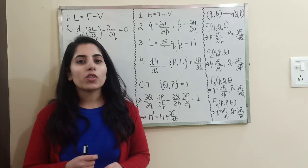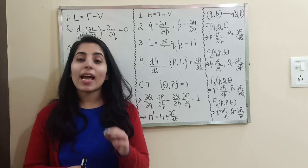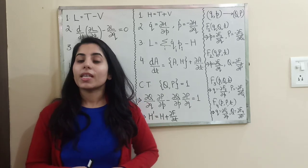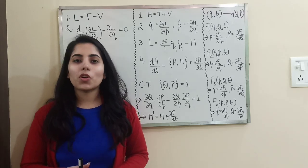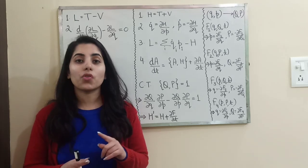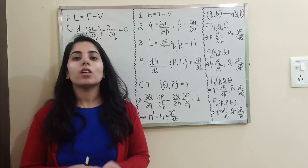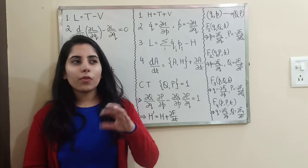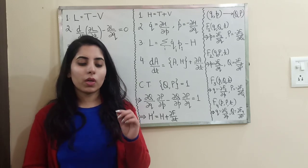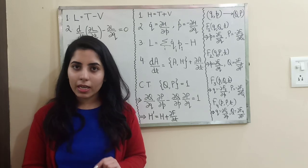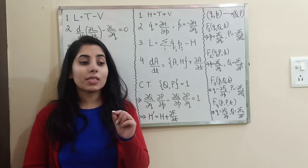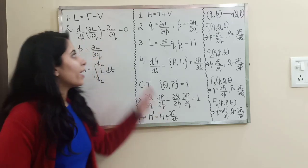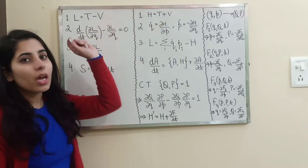Lagrangian is a function of generalized coordinate and generalized velocity. But Hamiltonian is a function of generalized coordinate and generalized momentum. In terms of formula, Lagrangian is T minus V — that means kinetic energy minus potential energy — and Hamiltonian is kinetic energy plus potential energy.